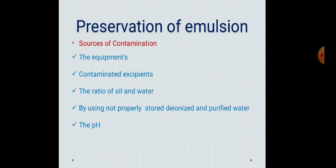Now we will discuss the preservation of emulsion. Emulsions prepared using emulsifying agents such as carbohydrates, proteins, sterols, or non-ionic surfactants may lead to the growth of bacteria, fungi, or molds in the presence of water. Contamination by these microorganisms may cause unpleasant odor, taste, or discoloration. Due to breakdown of the emulsifying agent, changes occur in the consistency of an emulsion, which may lead to cracking.